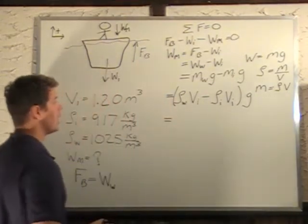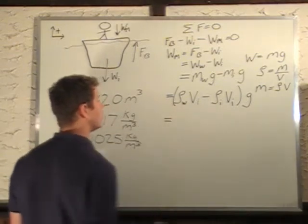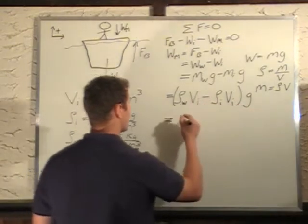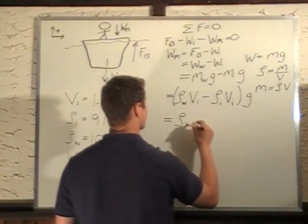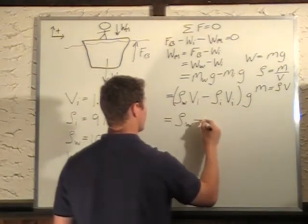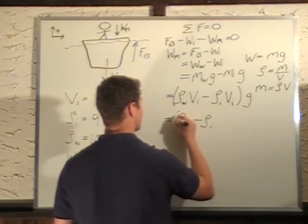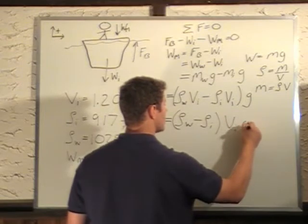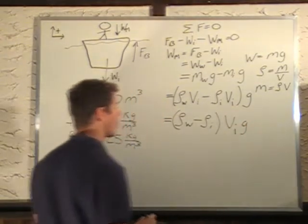So now I know all these values, so I can plug them in. I actually should have factored out volume first because it's the same. So we have rho of water minus rho of the iceberg, factor out volume of ice times G.